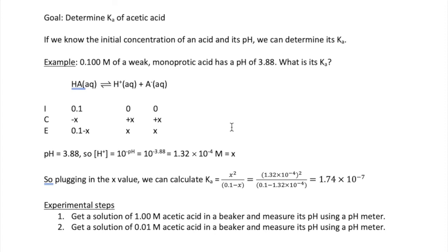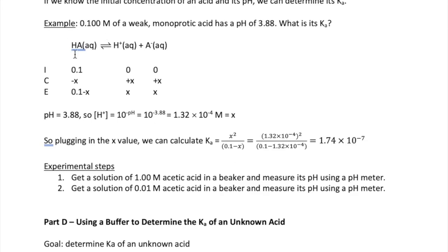The question is, how do you get the Ka of the acid from these measurements? Let me show you. Here's an example. Let's say we have 0.1 molar of a weak monoprotic acid with a pH of 3.88. What's the Ka? Well, since this is a weak monoprotic acid, like acetic acid, its ice table will look like this.